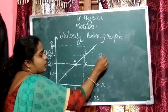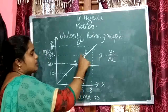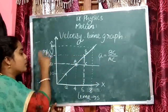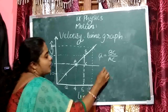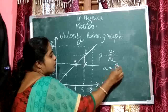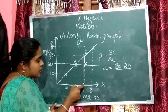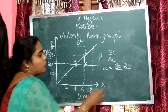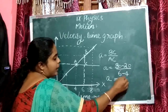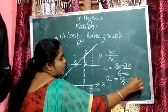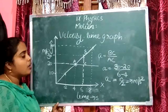Acceleration A is equal to BC divided by AC. BC is the change in velocity — that is 30 minus 20, which equals 10. AC is the time interval — that is 6 minus 4, which equals 2. So acceleration A equals 10 divided by 2, which equals 5 meter per second squared. In this way, we can find the acceleration of an object from the graph.